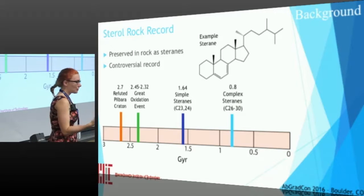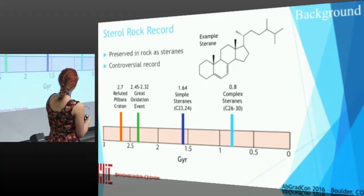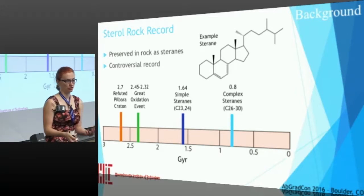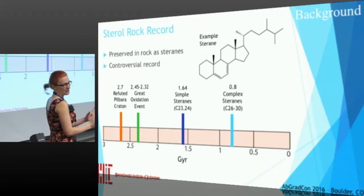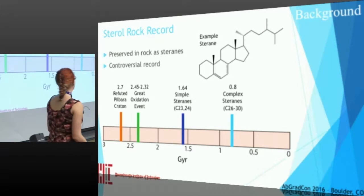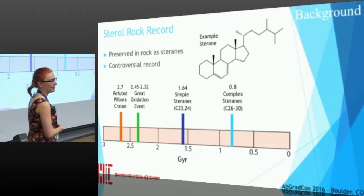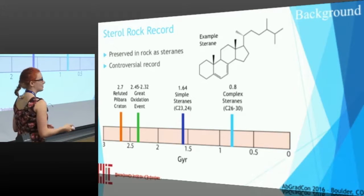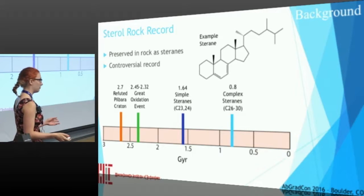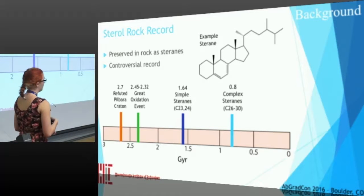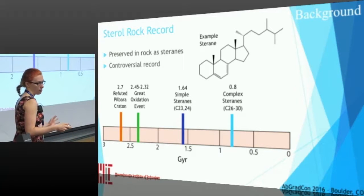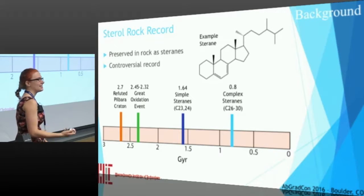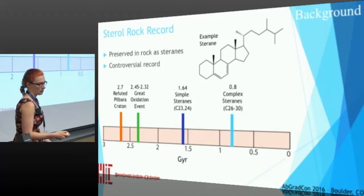To try to date when sterol synthesis evolved, people can look at sterols in the rock record — they're preserved as steranes, keeping their carbon backbone but losing some details like functional groups. However, the record is currently controversial. Back in 1999, sterols were reported in 2.7 billion year old rocks in Australia, which was very interesting because the Great Oxidation Event didn't occur until 2.4 billion years ago — that's the first accumulation of molecular oxygen in the atmosphere. So having these earlier than the GOE was a big deal, implying oxidative metabolism before appreciable oxygen.